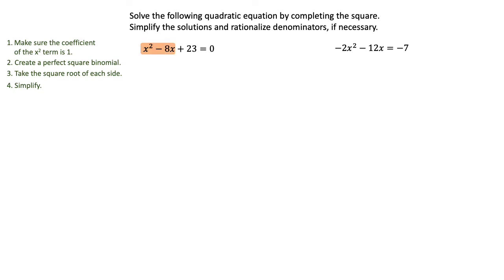We're going to create a perfect square binomial. In order to do that, we need to isolate our variable terms. I'm going to write the equation and subtract 23 from both sides so that those terms are by themselves. That leaves me x squared minus 8x on the left and negative 23 on the right. I went ahead and left a spot on the left-hand side because I really want a perfect square number that I can put in there.